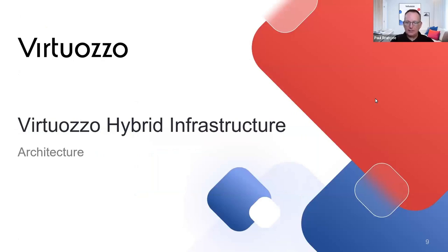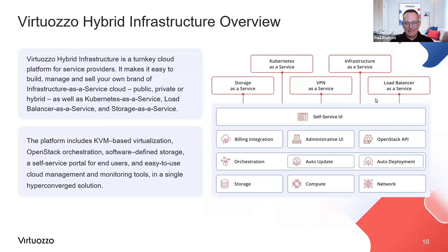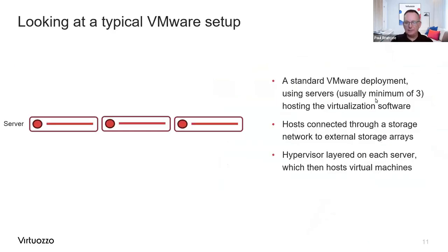I'm going to get into the technical side to explain the architecture, because when we have conversations with clients used to VMware, we need to help them understand what this transition and journey looks like. Our system is built upon a number of services all orchestrated at the back end using OpenStack, but we present it as an easy-to-use and consume service. This can include Kubernetes-as-a-service, load-balancer-as-a-service, storage-as-a-service, and so on. You can use all of these or just one if you wish.